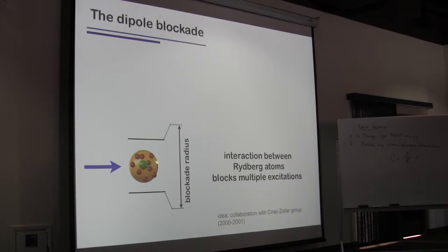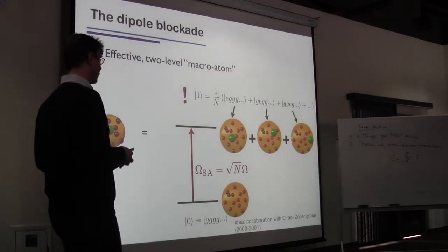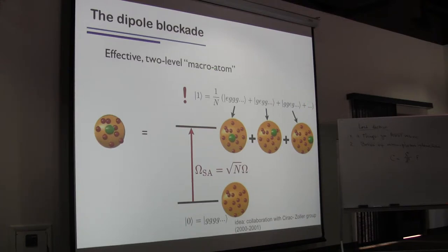The simultaneous excitation will be blocked at distances smaller than the so-called blockade radius, which can be quite substantial — on the order of 10 micrometers. That's the essence of the Rydberg blockade effect. If we start with a cloud of atoms which contains many atoms, but the cloud is smaller than the blockade radius, you will be able to excite one atom but no more than one — states with more than one excitation will be blocked. You can think of this blockaded cloud as a kind of macro-atom, where transitions are only possible between two states: all atoms in the ground state, or one atom excited.